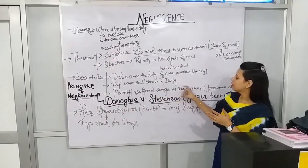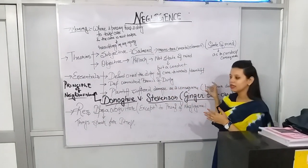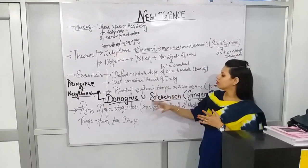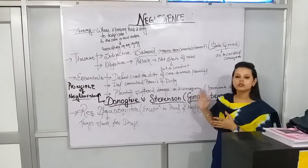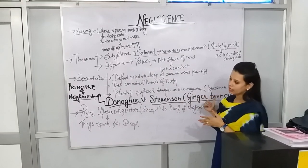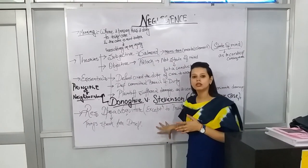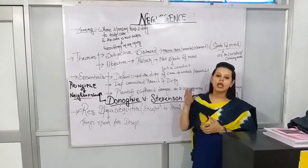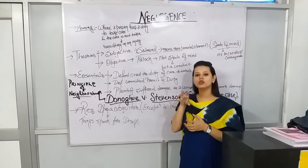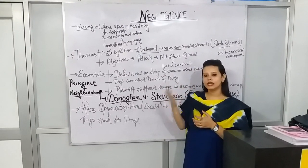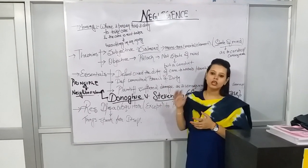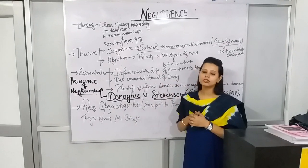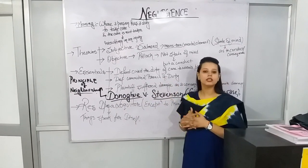That particular damage can be said to be proximate damage. There was a very famous case law, Donoghue vs. Stevenson, which was also known as the ginger beer case. In this case, there was a lady who went to a beer shop and she took a beer, and in her beer there was a decomposed snail. Because of drinking that particular beer, she fell ill and she sued the person who was running that particular restaurant.